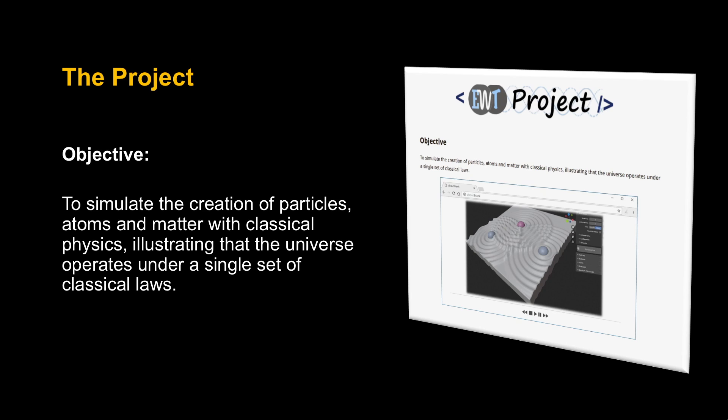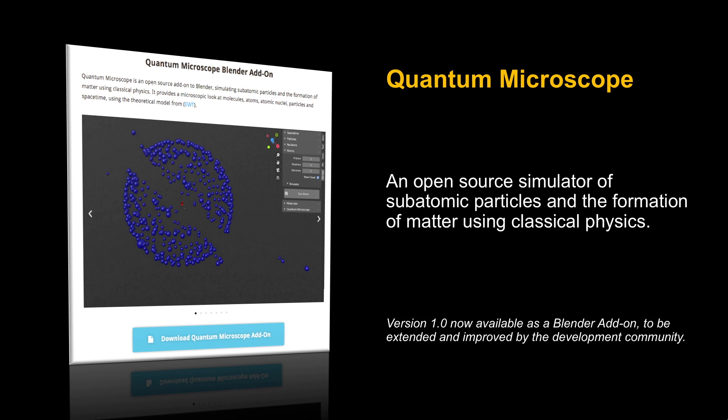Why? Because when we can achieve this objective, it will give us a much better understanding of the universe in which we live. And the first version of the project simulator has been created, and it's called the quantum microscope. It's an open source simulator of subatomic particles and the formation of matter using only classical physics. And it's open source to be extended and improved by the development community. And so next, I'm going to give you a quick preview of its current features.